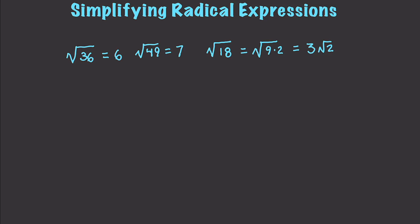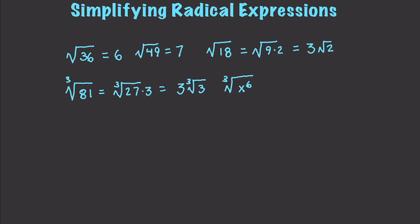Let's do a couple more of these. Let's say you have the cube root of 81. We could break that down into the cube root of 27 times 3, with 3 being a prime value, which gives us 3 times the cube root of 3. Now let's do this with terms. If we had the cube root of x to the power of 6, we can convert that into x squared to the power of 3, which gives us a value of x squared.